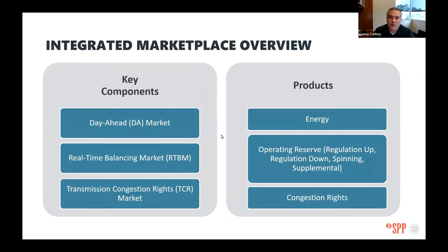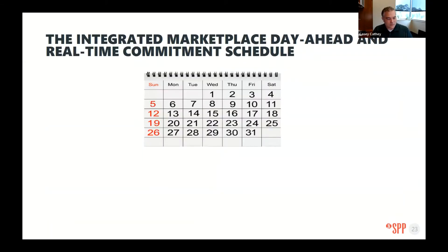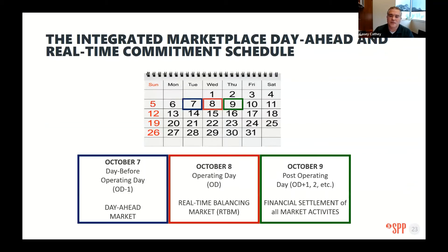This visual shows the operating day. Every single day is an operating day. Let's say today is Wednesday — we would be operating the day-ahead market for tomorrow, while simultaneously operating the real-time balancing market for today, while the settlements group is settling for previous operating days. It's this constant rolling function.